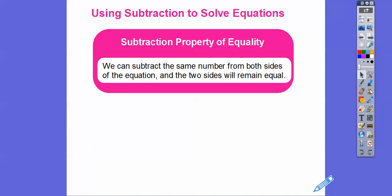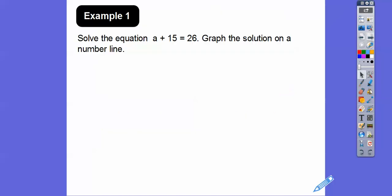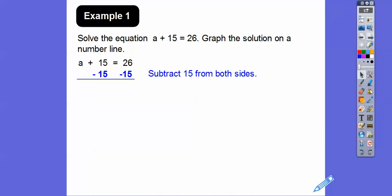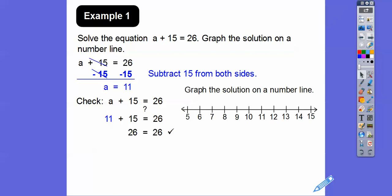When an equation contains an addition sign, we solve by subtracting that same number from both sides. Solve this equation: a plus 15 equals 26, and graph the solution on a number line. We're going to subtract 15 from both sides. 26 minus 15 gives us 11. Let's check: 11 plus 15 does equal 26, so it checks out. Now let's graph 11 on the number line — a nice blue dot right there at 11.